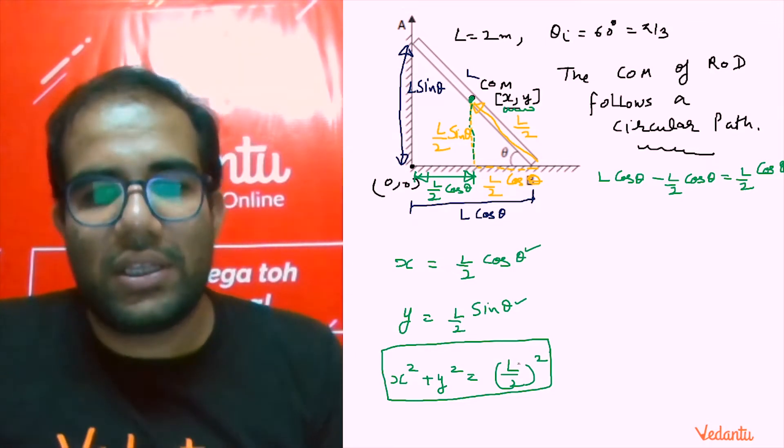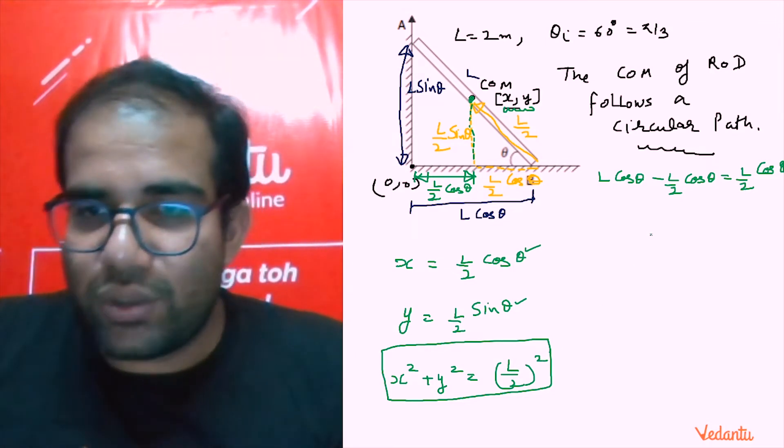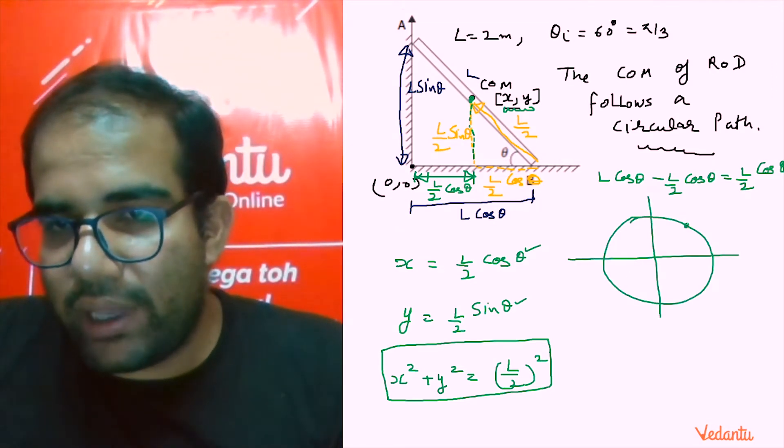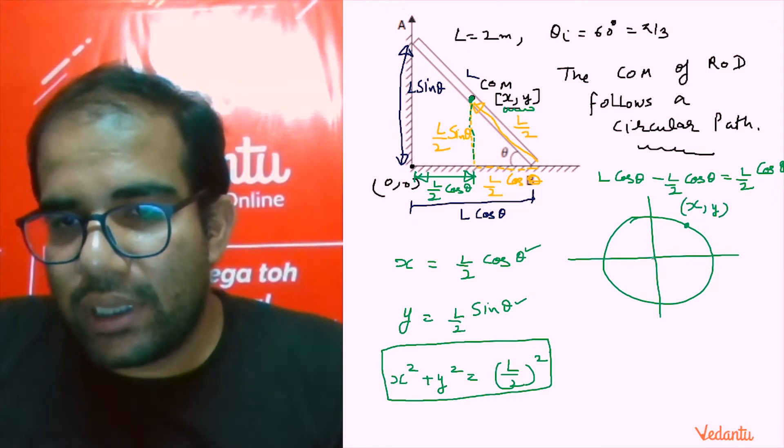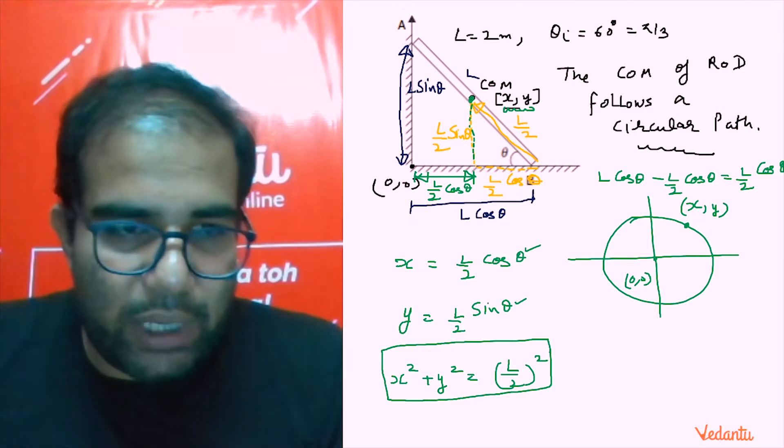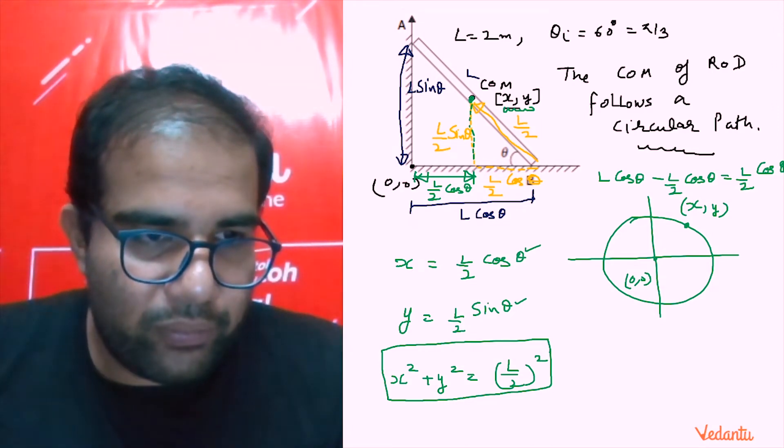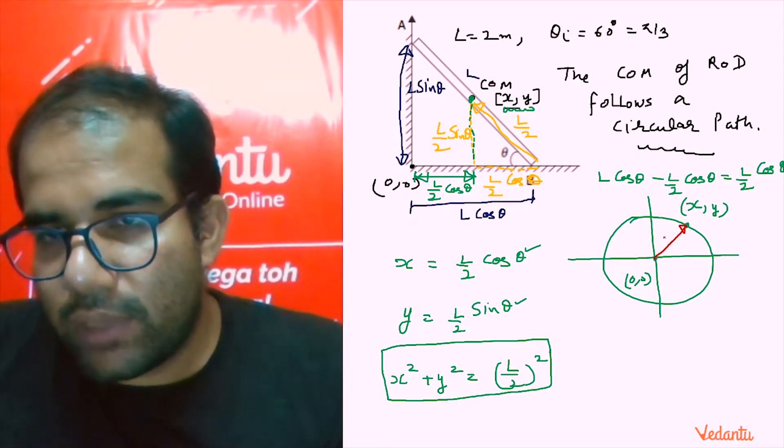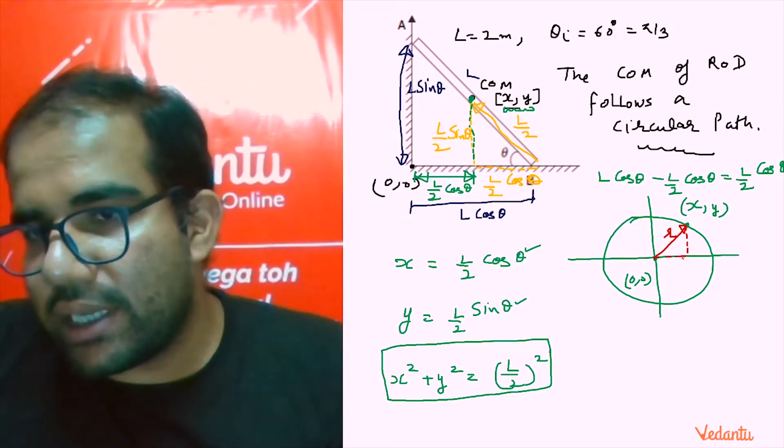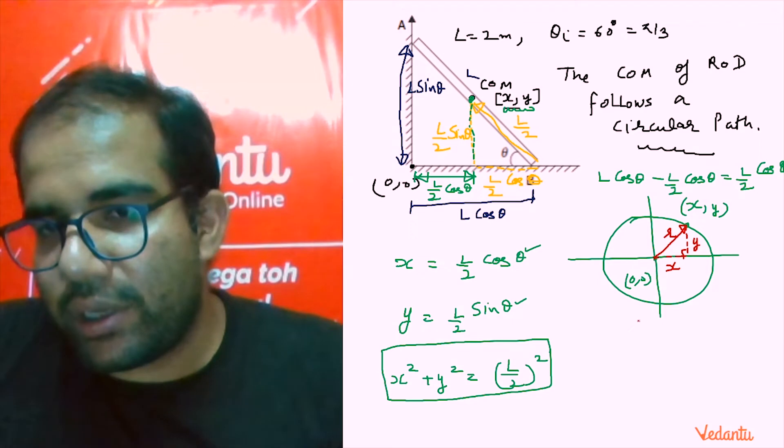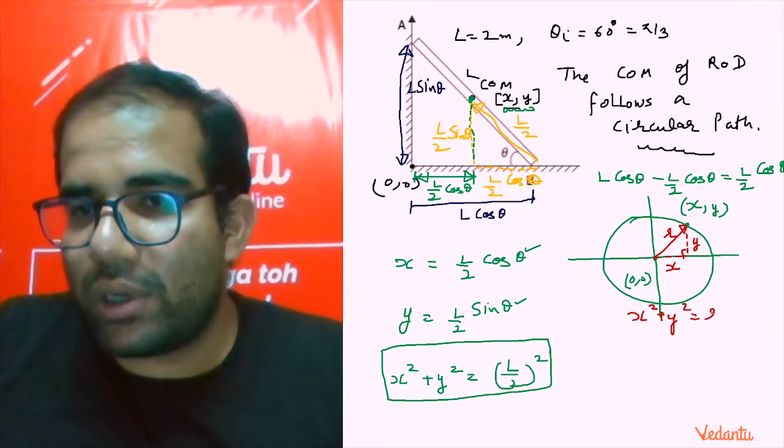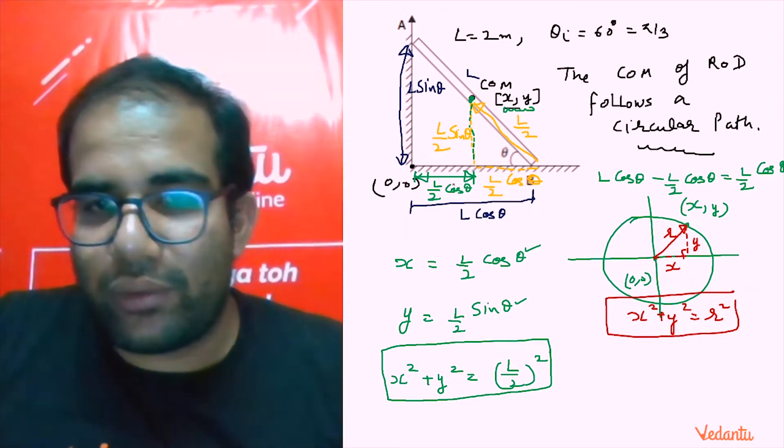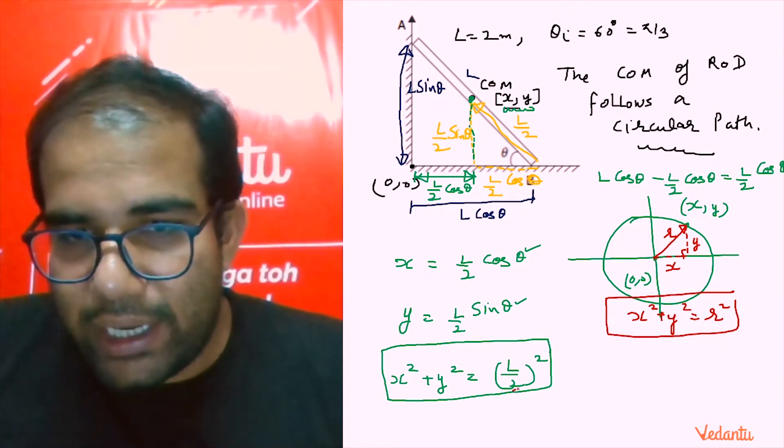I guess the game is now over. Any particle which moves in a circle having coordinates x comma y, having origin 0 comma 0, the equation is by applying Pythagoras theorem simply x square plus y square is equal to r square. So that is the equation of a particle moving in a circle. What a beautiful thing it is. The radius is L by 2.